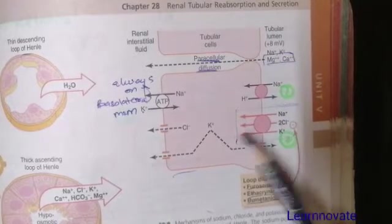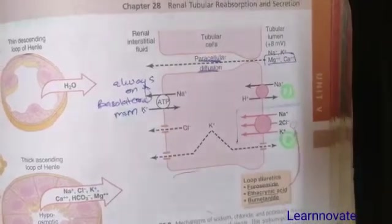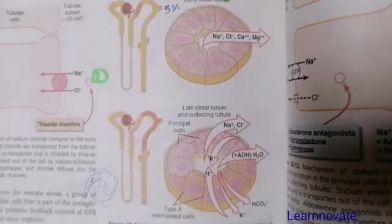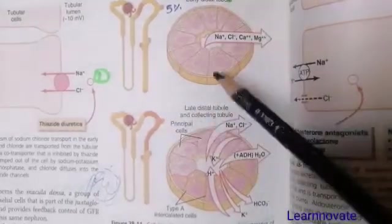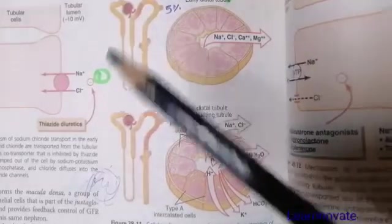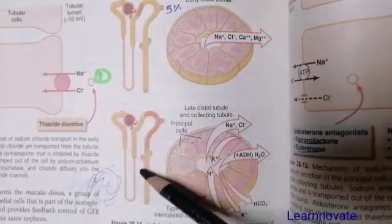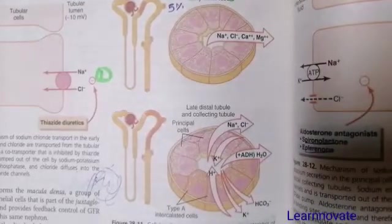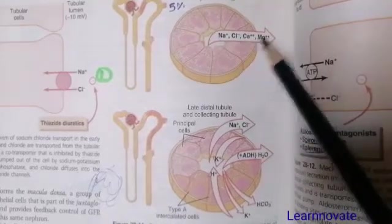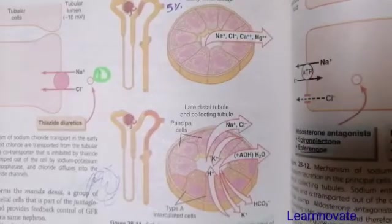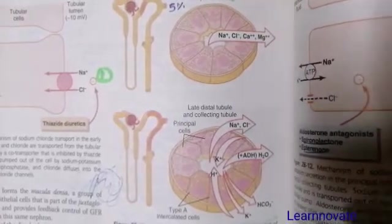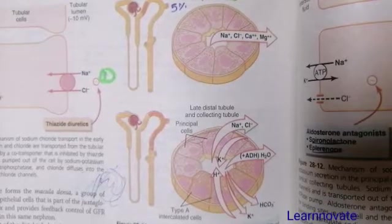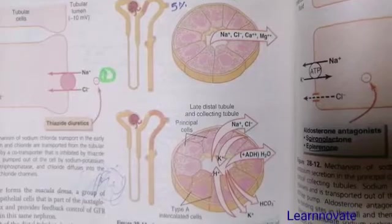The next part is the distal convoluted tubule, which has two parts: the early distal convoluted tubule and the late distal convoluted tubule with the collecting tubule. The early distal convoluted tubule is again impermeable to water and permeable to solutes. Sodium chloride, calcium, and magnesium are reabsorbed, making the remaining fluid again hyposmolar. Only 5% of reabsorption takes place here, with no water reabsorption.